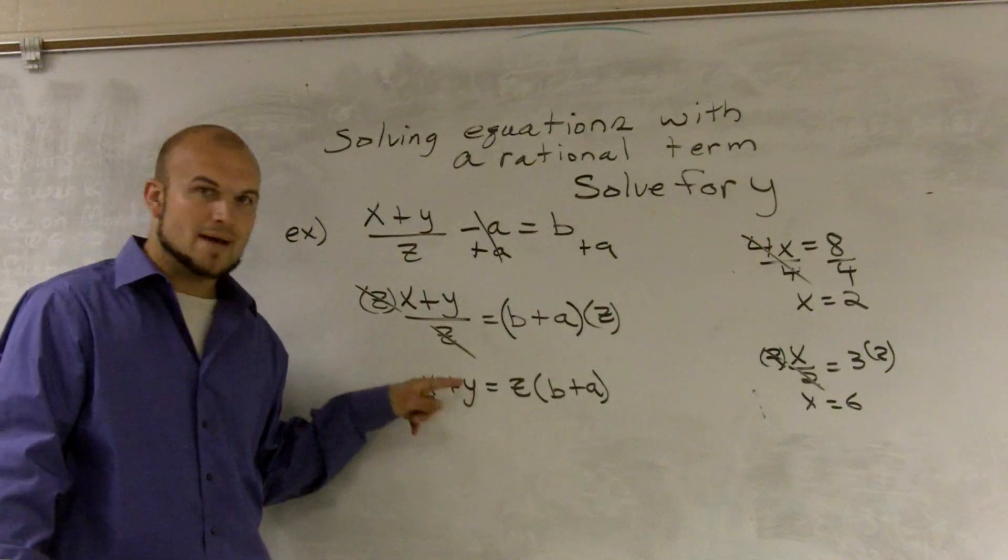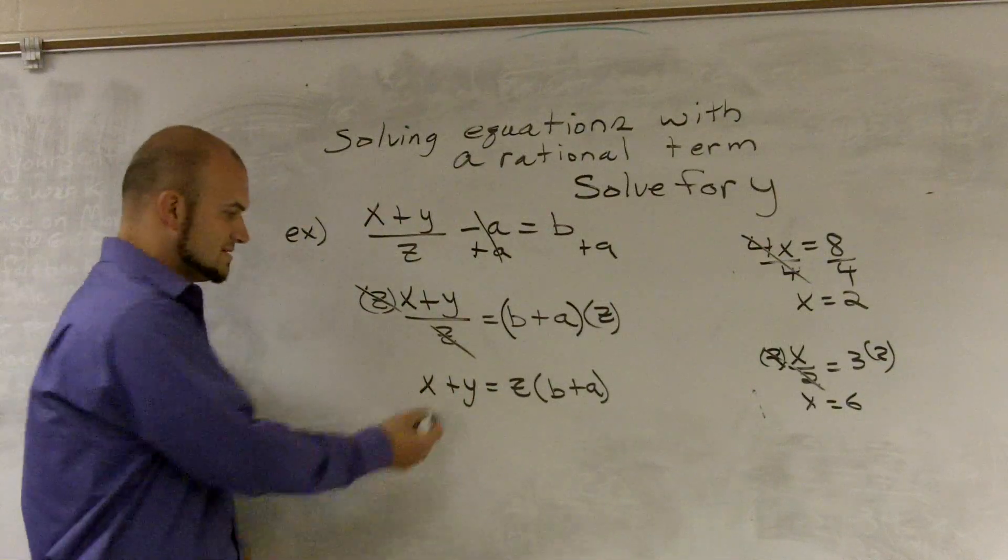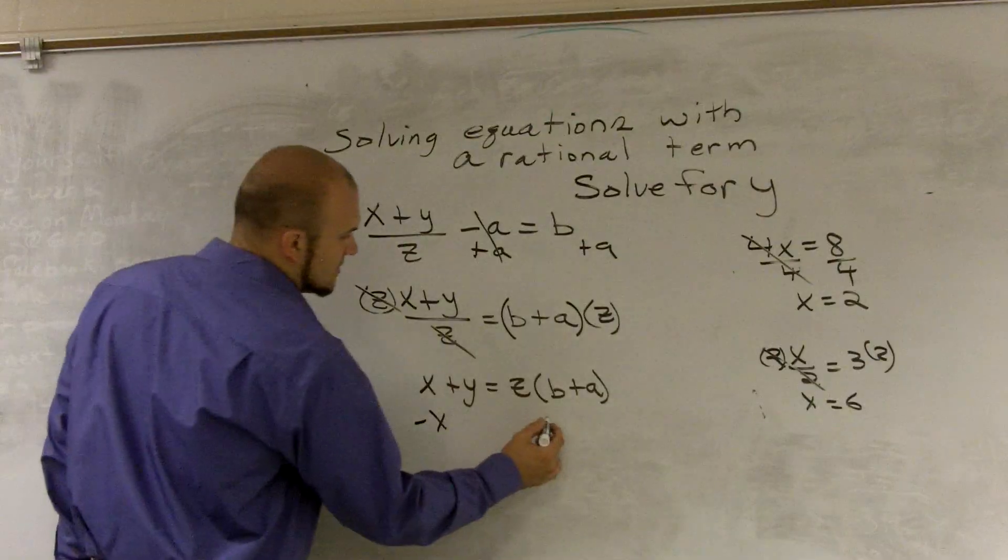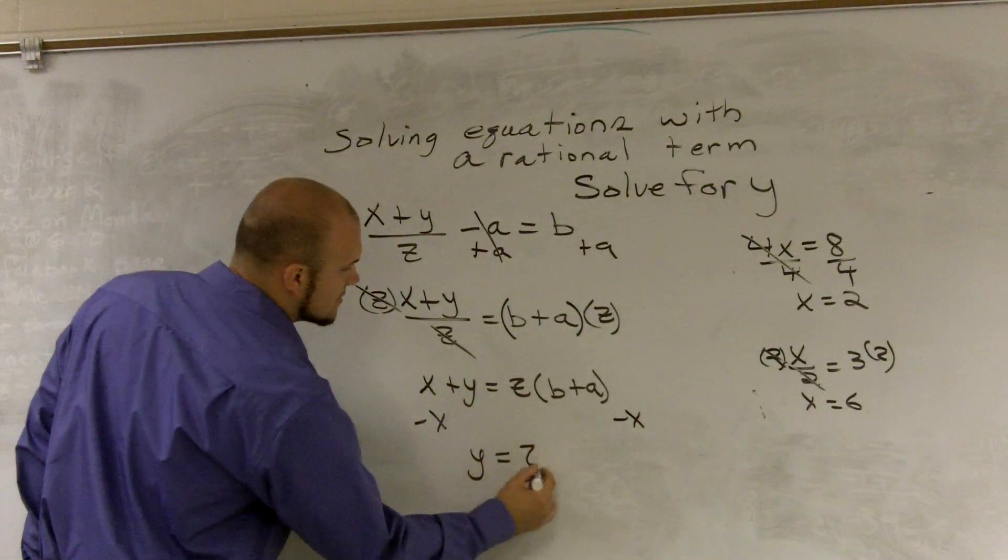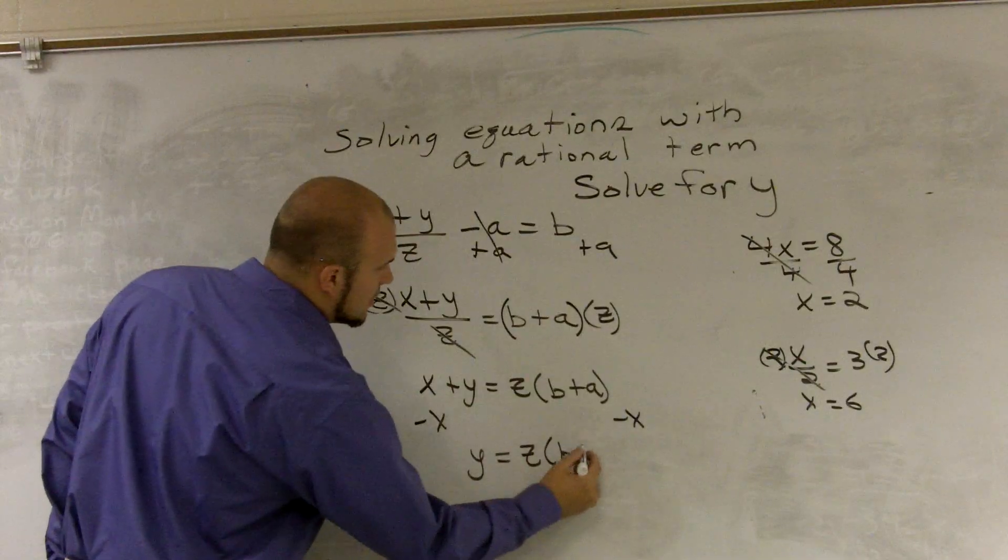Then, now lastly, I need to get that y by itself. So I need to get rid of the x. Since the x is added to the y, I'm going to subtract the x. Therefore, my final solution is y equals z over b plus a.